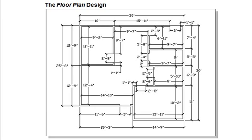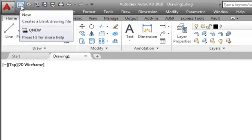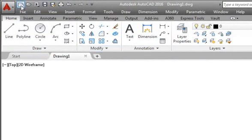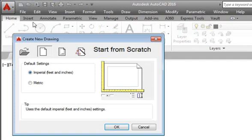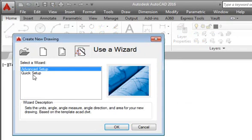In this video we will focus on object properties and the organization of objects. We will use a floor plan design to illustrate this. Let us begin by starting a new file. Click the New File icon. We will select the Use a Wizard option and choose Quick Setup.